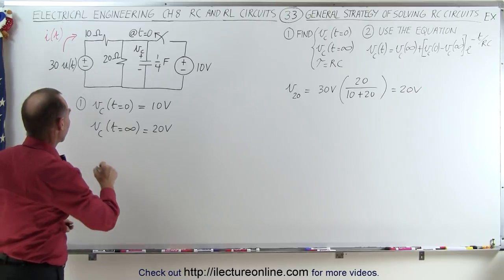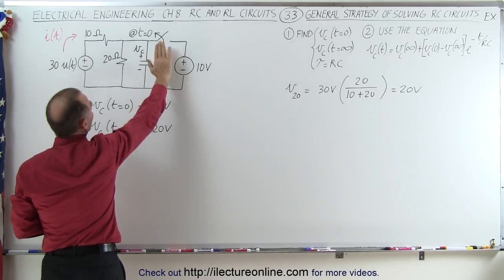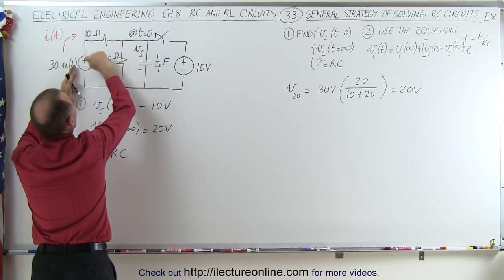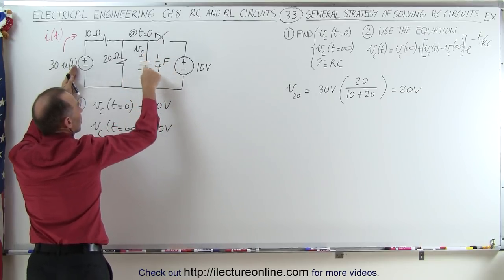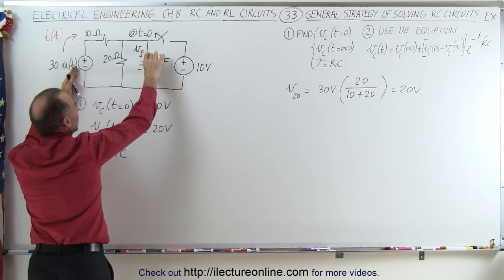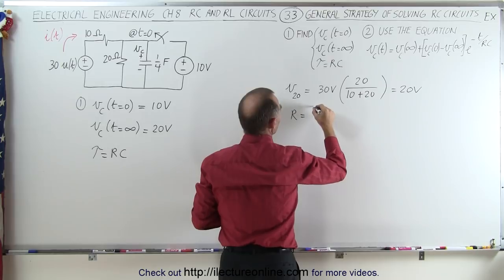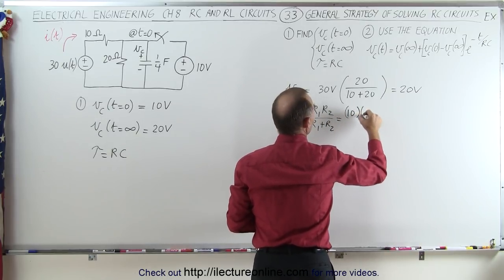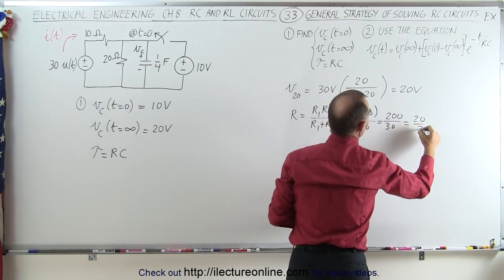The next thing we want to do is find the time constant, which equals resistance times capacitance. Once the switch is open, this part of the circuit is no longer connected — we just have the remaining part with the voltage going through this resistor, through the capacitor, and through this resistor. From one terminal of the capacitor to the next, you can go through either the 10 ohm resistor or the 20 ohm resistor, so relative to the capacitor these two resistors are in parallel. The equivalent resistance R equals R1 times R2 over R1 plus R2, which is 10 times 20 divided by 10 plus 20 — that's 200 divided by 30, which is 20 over 3 ohms.